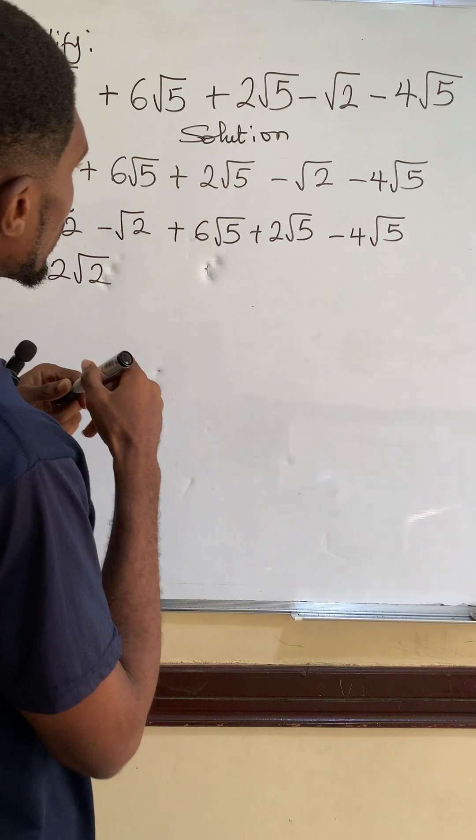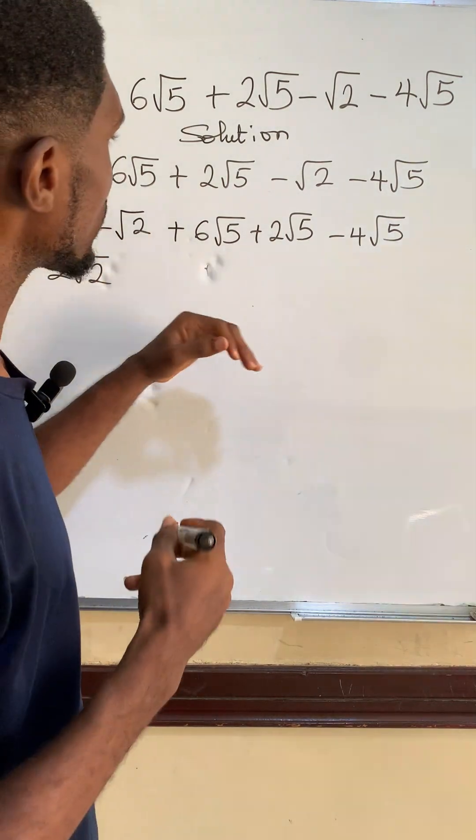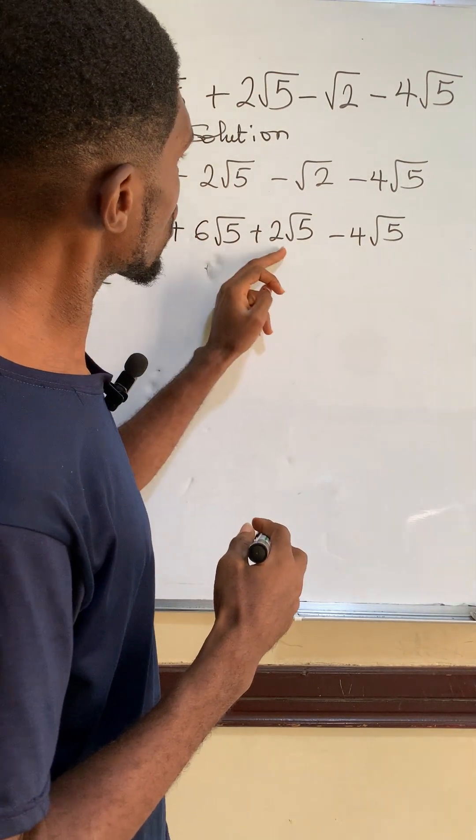Then here we don't know if it is plus or not, so let's stop first. 6 plus 2 is 8.